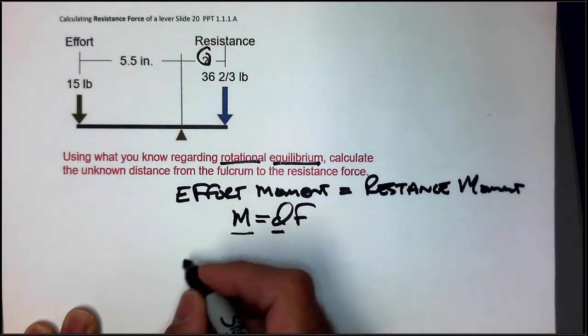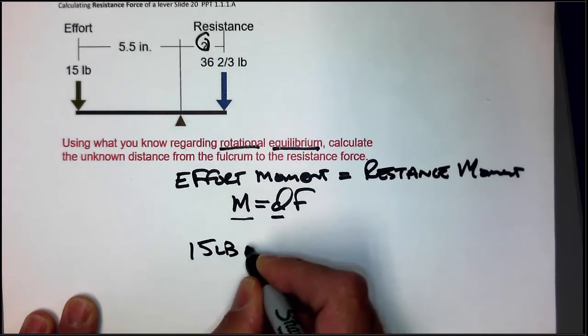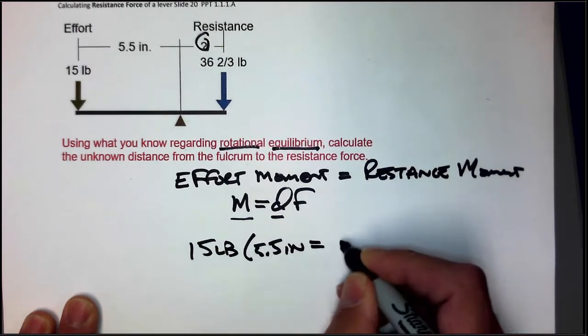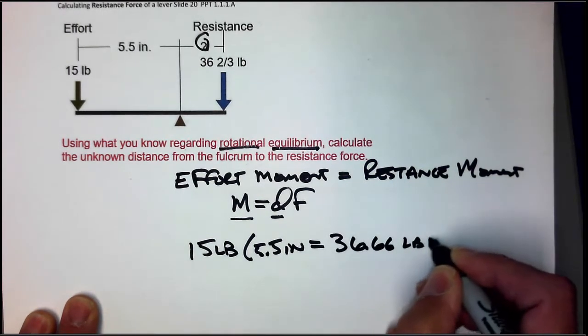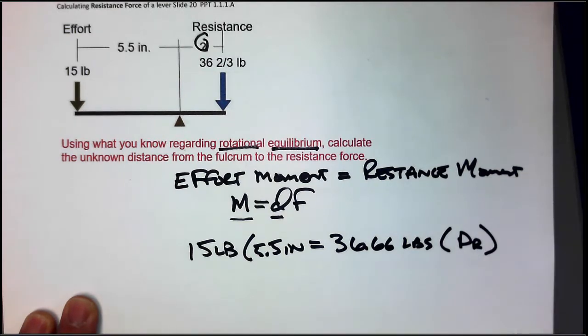So if we say, easily, if 15 pounds times 5.5 inches is then equal to 36.66 pounds times the distance that we're looking for. And that would be the distance of the resistance. So this becomes pretty easy.